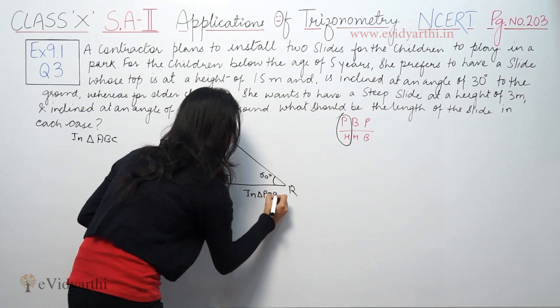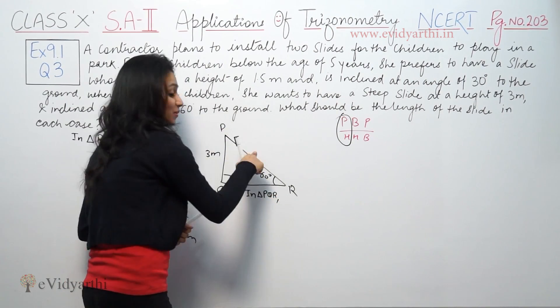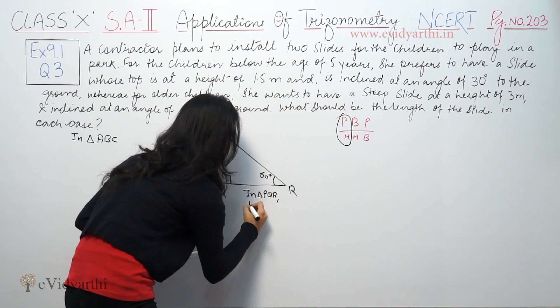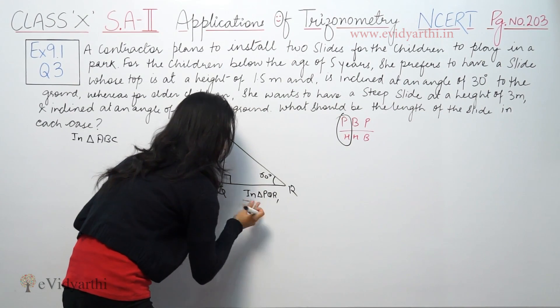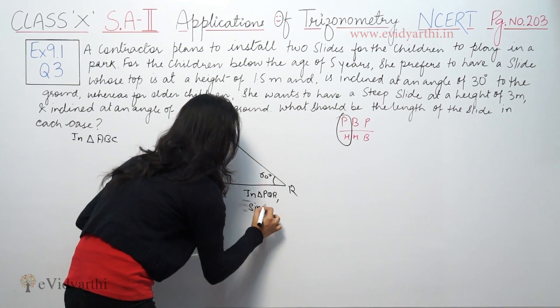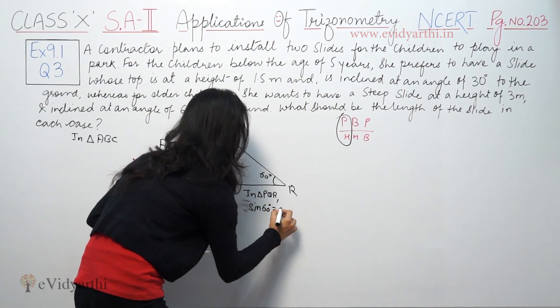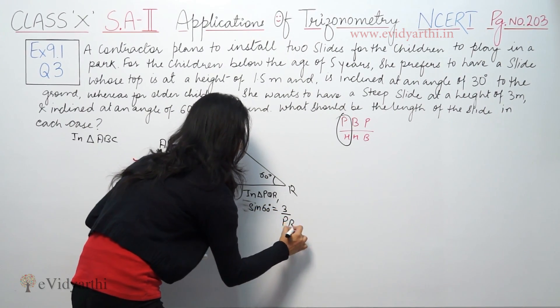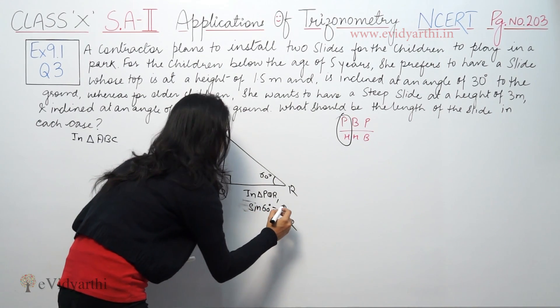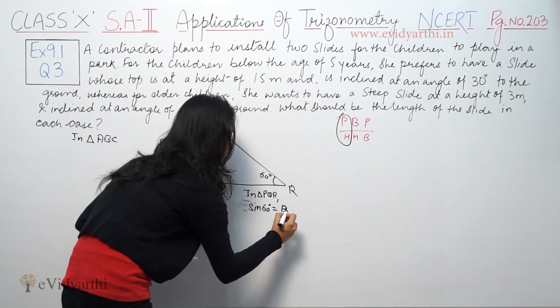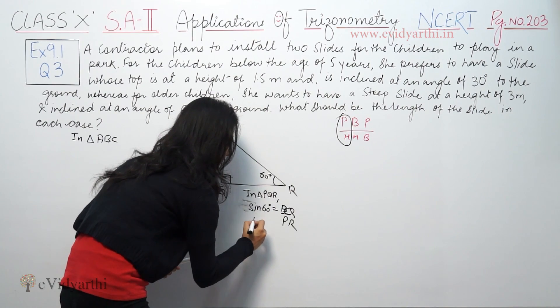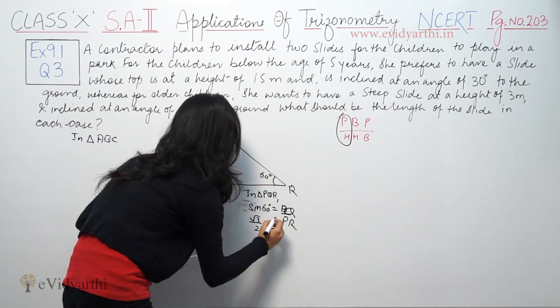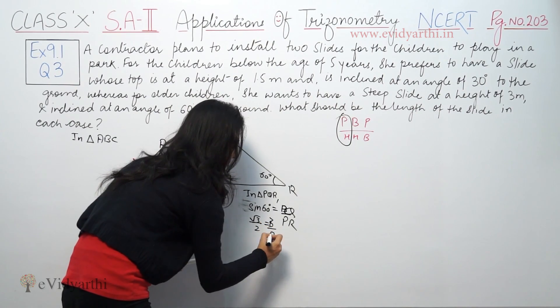Now we will use sin 60 degrees, which means PQ by PR. Sin 60 value is root 3 by 2, PQ value is 3, and we need to find PR.